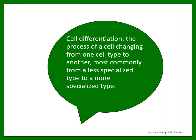To summarize, cell differentiation is the process of a cell changing from one cell type to another, most commonly from a less specialized type to a more specialized type. Of course, like everything else that is born, cells eventually die.